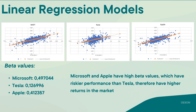Looking at Apple's linear regression model, we can see that the slope of Apple is 0.4, which is also really high compared to Tesla. So we can say that Apple and Microsoft have high beta values, indicating riskier performance, and therefore they are more likely to have higher returns in the market.